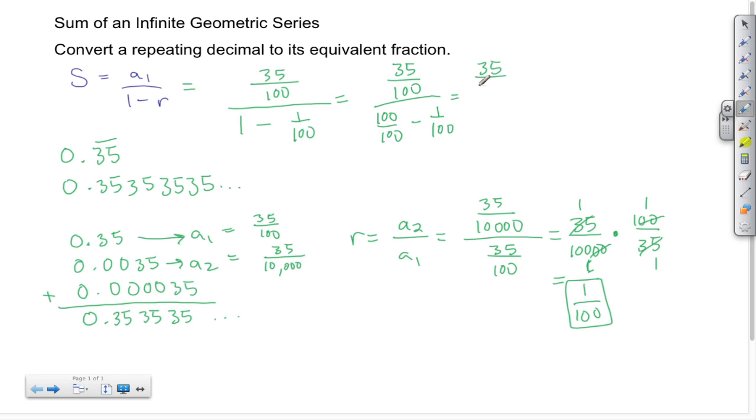So 35 over 100 divided by, well, 100 minus 1 is 99 over 100. And again, I have to multiply by the reciprocal in this complex fraction. So 35 over 100 times...